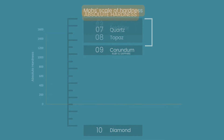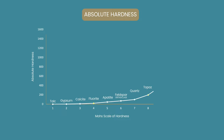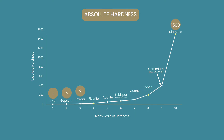A true measurement of hardness is absolute hardness. This scale is most commonly used by scientists, and it allows us to truly see how hard the minerals are in proportion to one another. The absolute hardness of talc is 1, diamond is 1500, and the other minerals can be assigned an exact figure expressing their hardness.